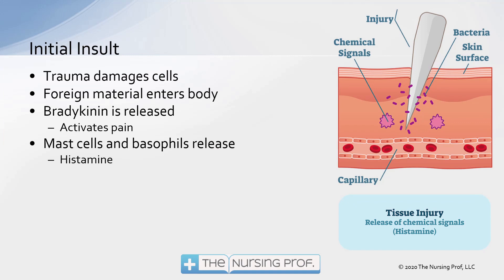Let's take each one of these in a little more detail. We have our initial insult — the nail punctured the skin and damaged the cells. Foreign material, including bacteria on the skin and on that nail, will also enter the body. Bradykinin is going to be released, and first of all that's going to activate pain. Then the mast cells and basophils are going to start to release histamine. Histamine is that primary initial mediator of the inflammatory process.